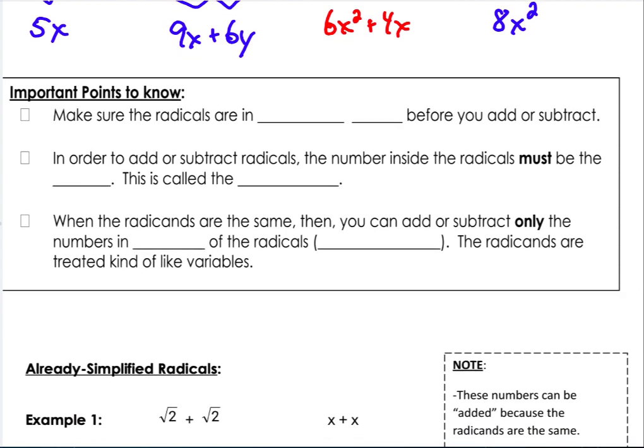First is make sure the radicals are in simplest form. That's what we worked on the last unit when we would take a radical and break it into its pieces to see if we could pull out any perfect square factors.